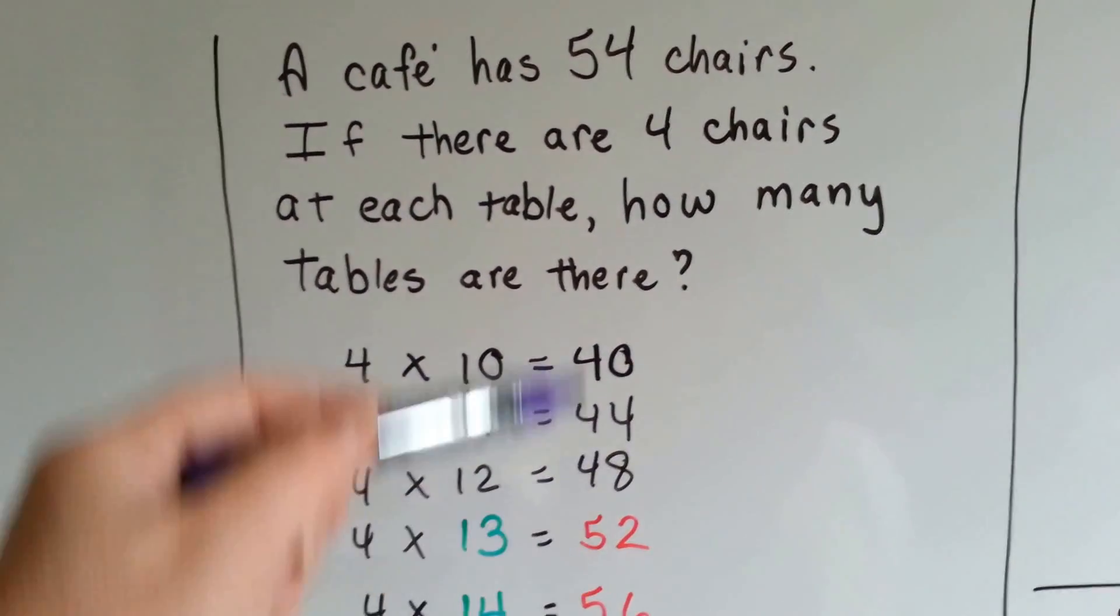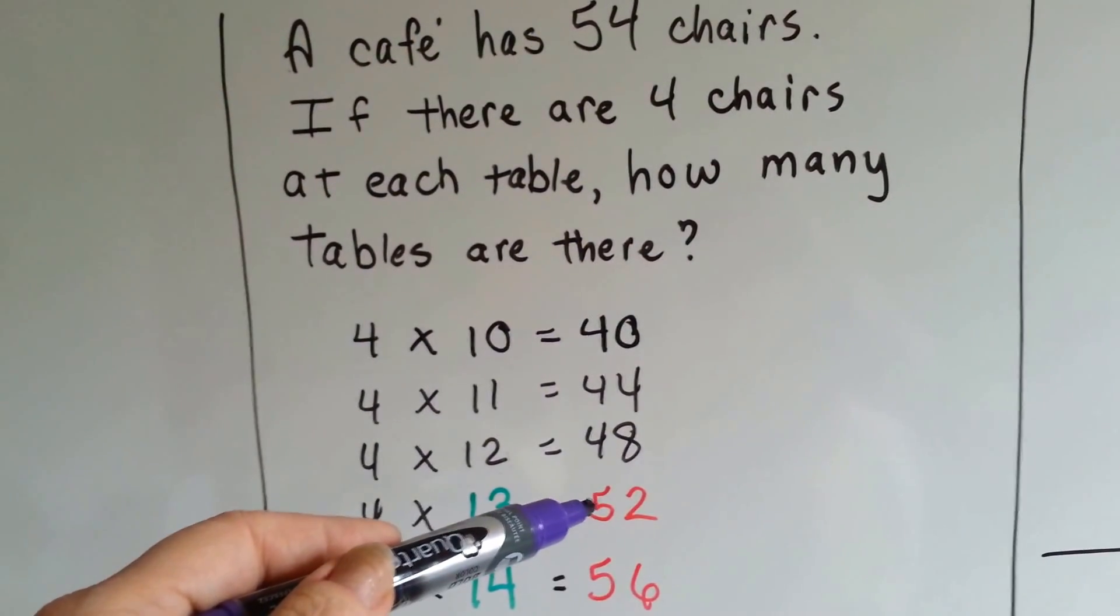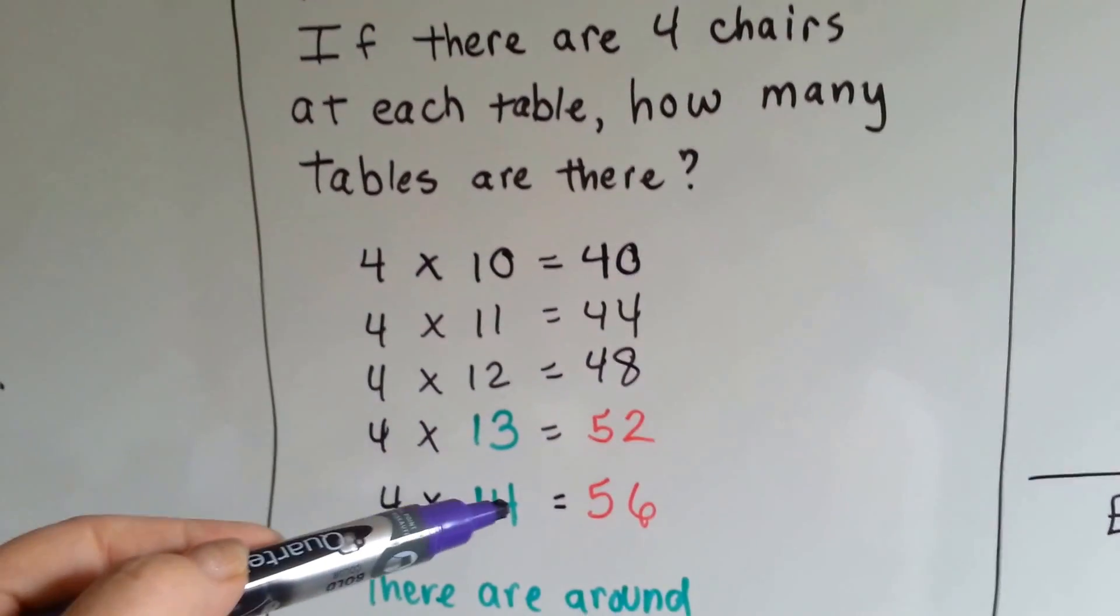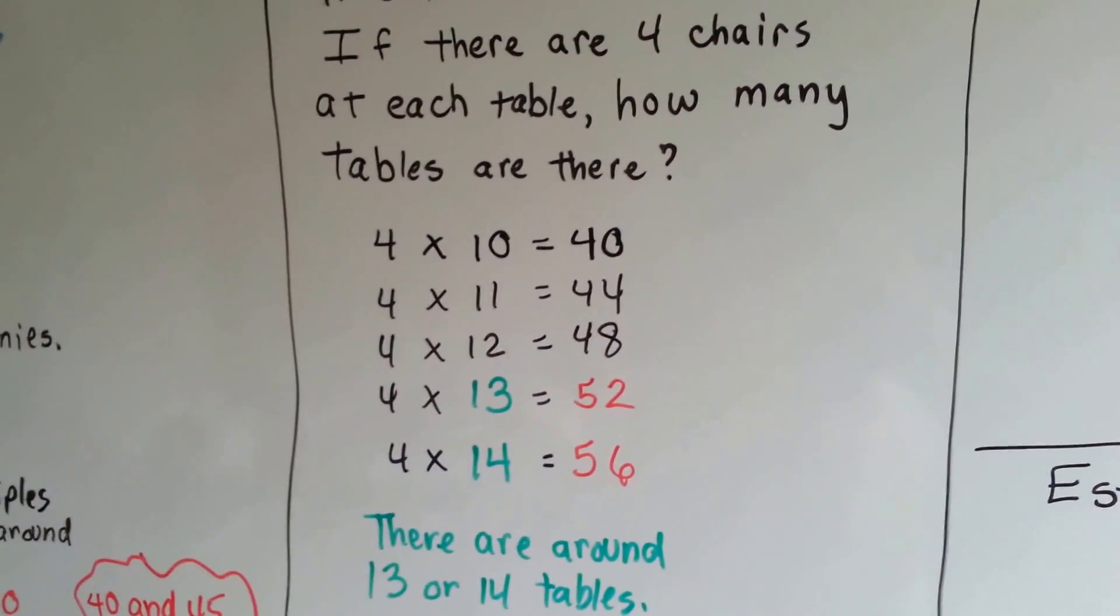And keep adding 4 until you get around this number. Here's the number before it and the number after it. So 4 times 13 is 52 and 4 times 14 is 56. So that means there's 13 or 14 tables.